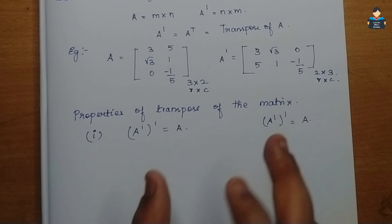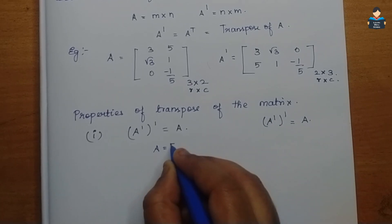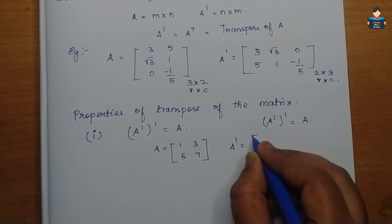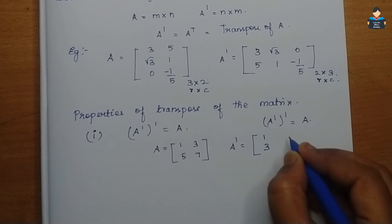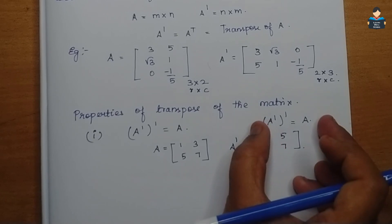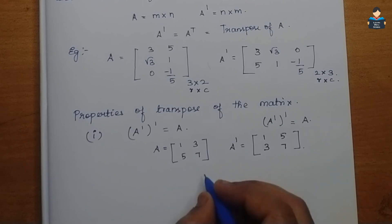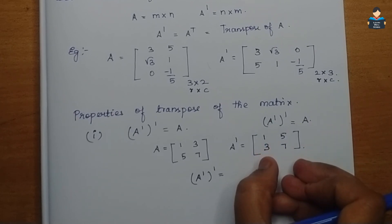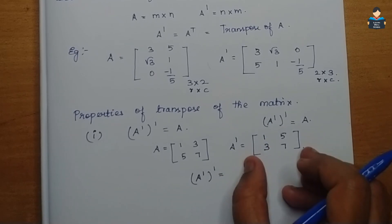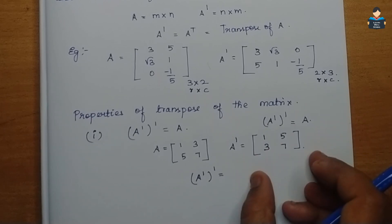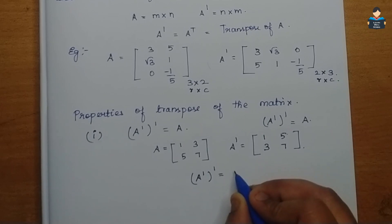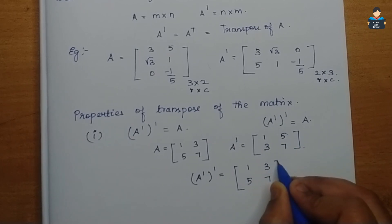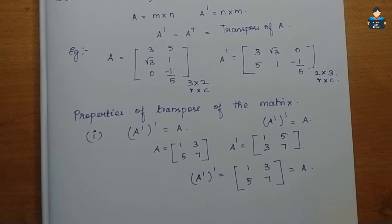Let's write an example. Let matrix A = [1, 3; 5, 7]. The transpose A' — row becomes column — gives [1, 5; 3, 7]. Then (A')' — taking the transpose again — gives [1, 3; 5, 7], which equals the original matrix A. This verifies the first property.